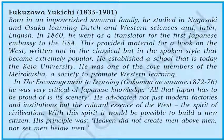Fukuzawa Yukichi (1835–1901) was born in an impoverished samurai family. He studied in Nagasaki and Osaka, learning Dutch and western sciences, and later English. In 1860 he went as a translator for the first Japanese embassy to the USA. This provided material for a book on the West written in the spoken style of Japan that became extremely popular. He established a school that is today Keio University, and was one of the core members of the Meirokusha, a society to promote western learning.